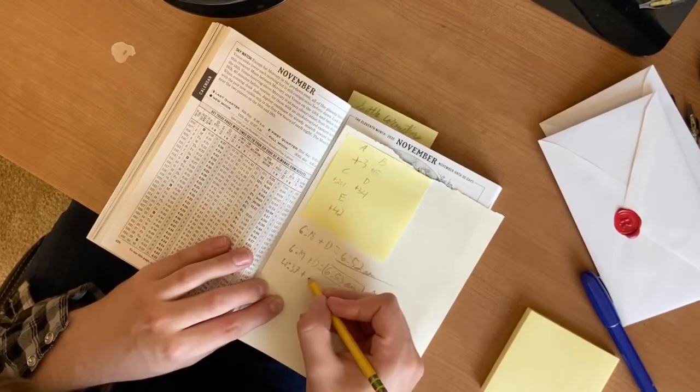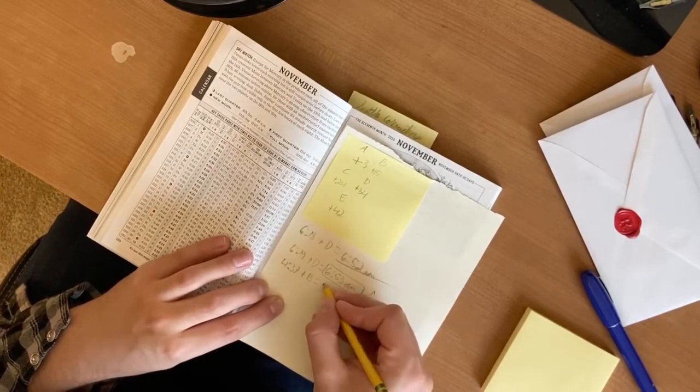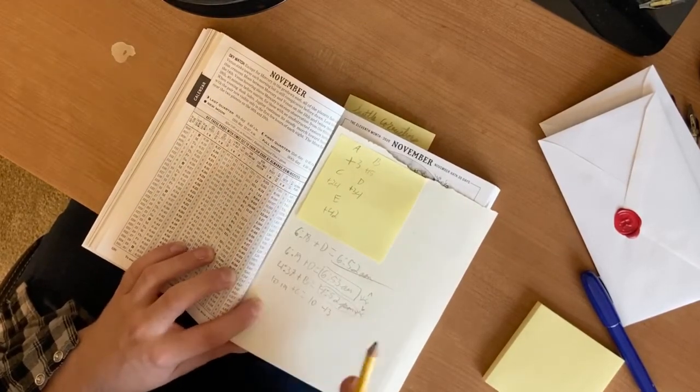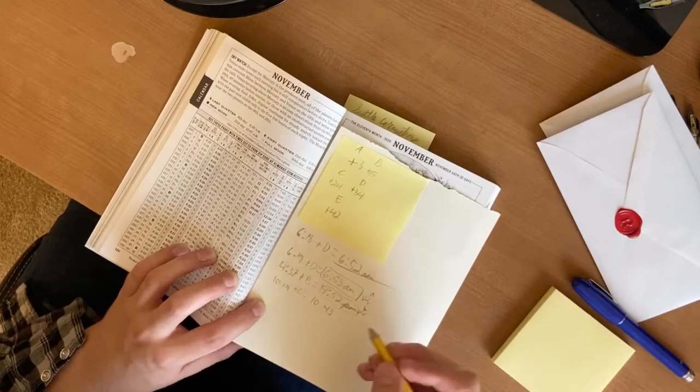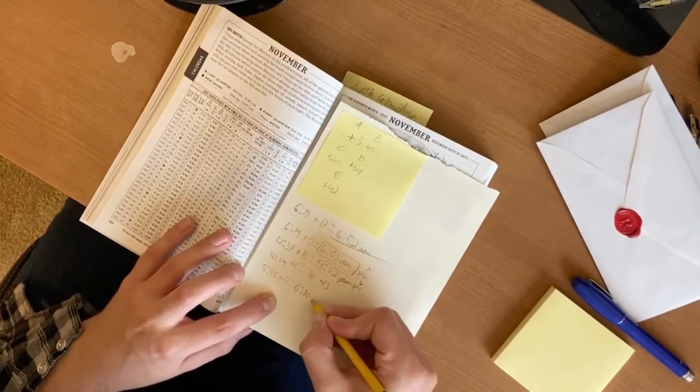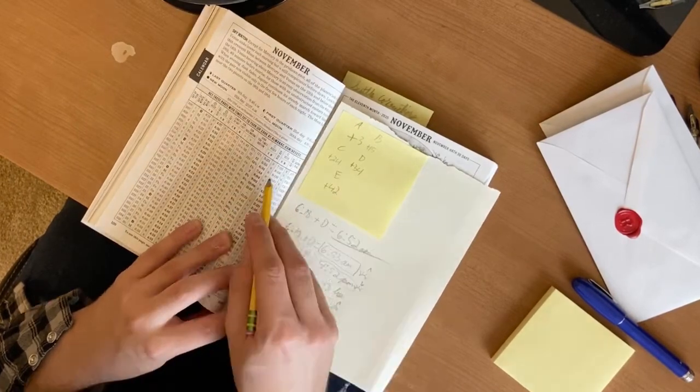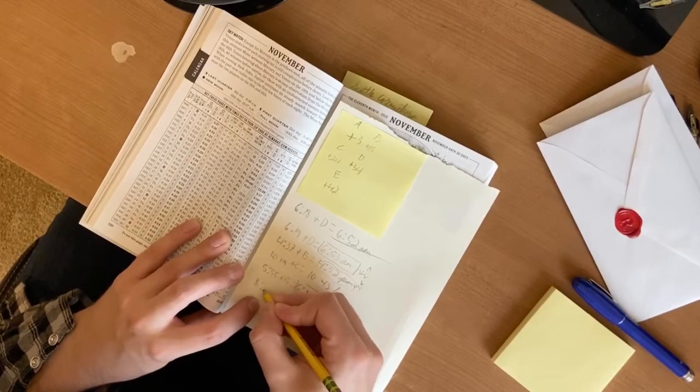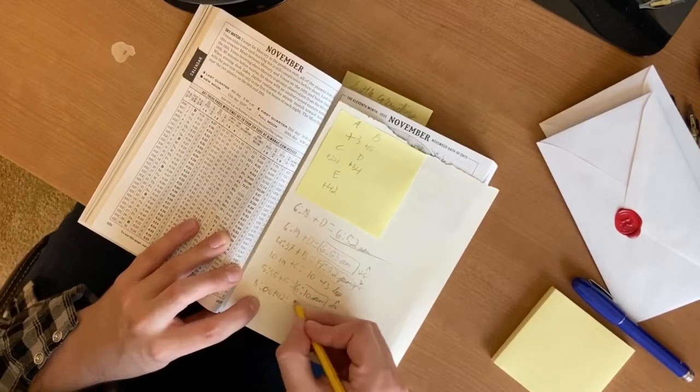Now interestingly enough, and honestly I think the most exciting, is we have moonrise and moonset. Moonrise is at 5:55 and the rise key is B, and that's going to be 6:10 p.m. And the moon sets at 8:06 a.m., it's 42, so 8:48.